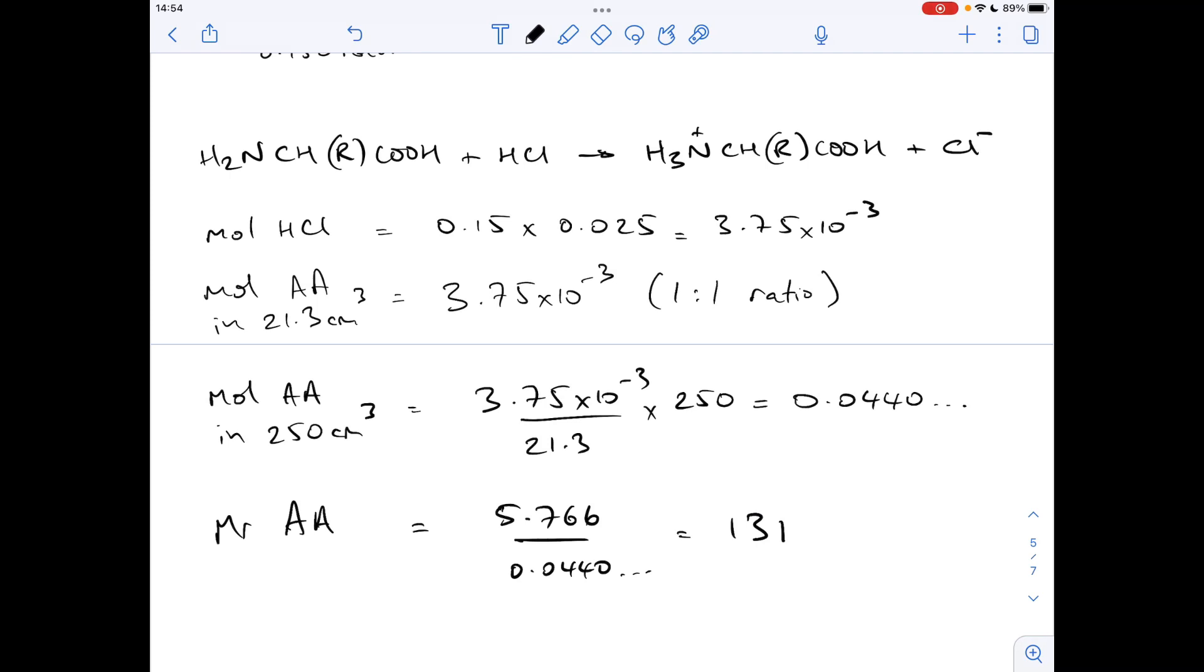OK, so what we need to do now is work out the MR of the R group. We're going to subtract all the known mass from the general formula of the alpha amino acid from that 131 and see the MR of the R group that's left behind.